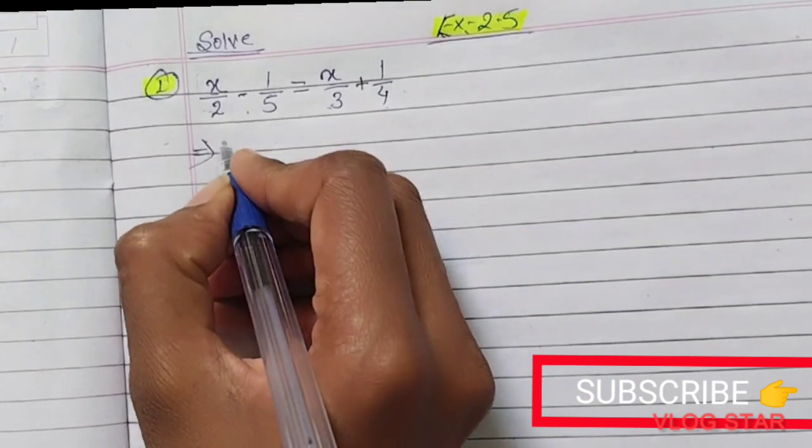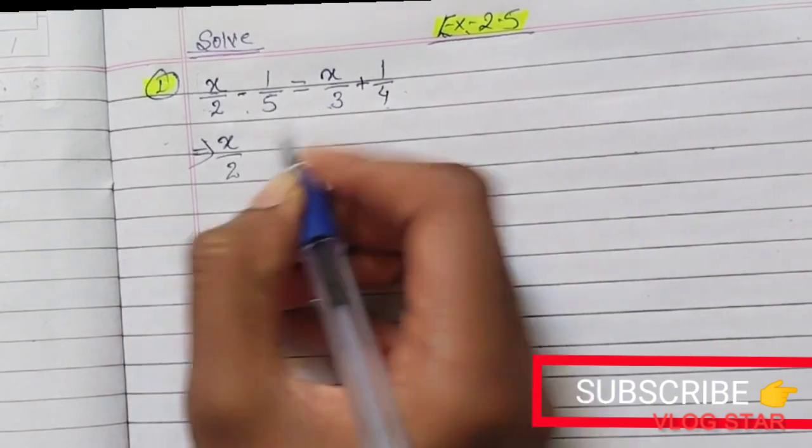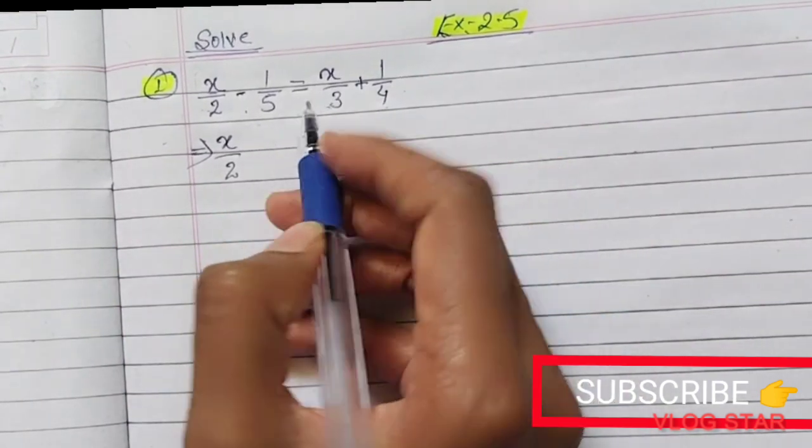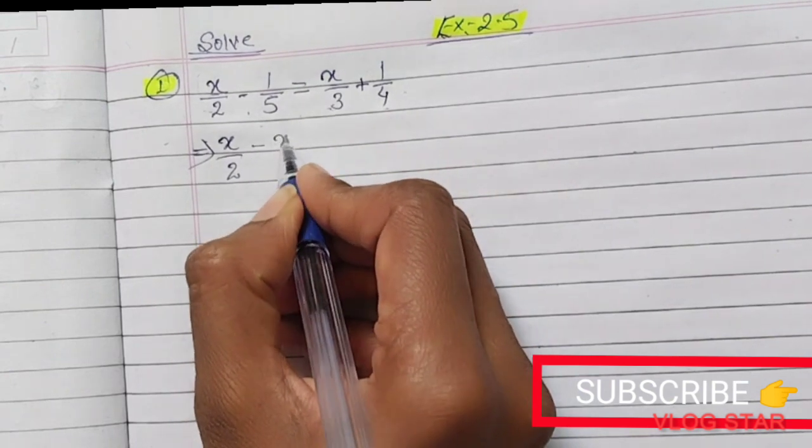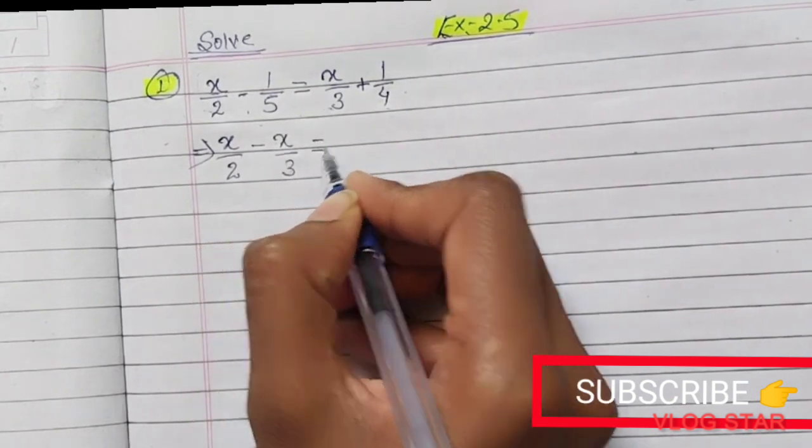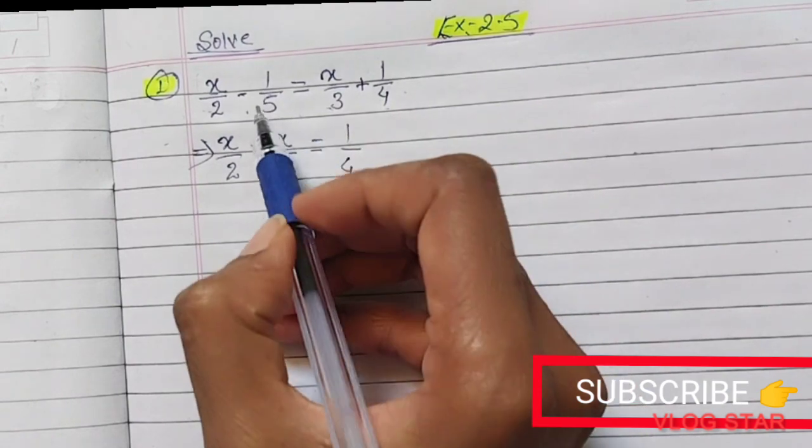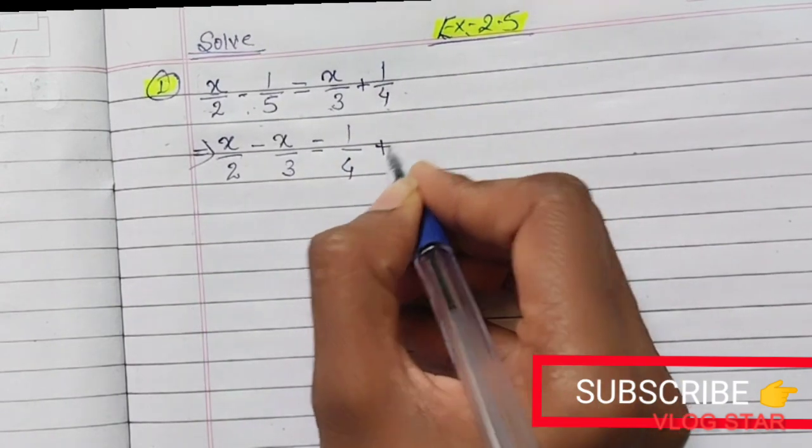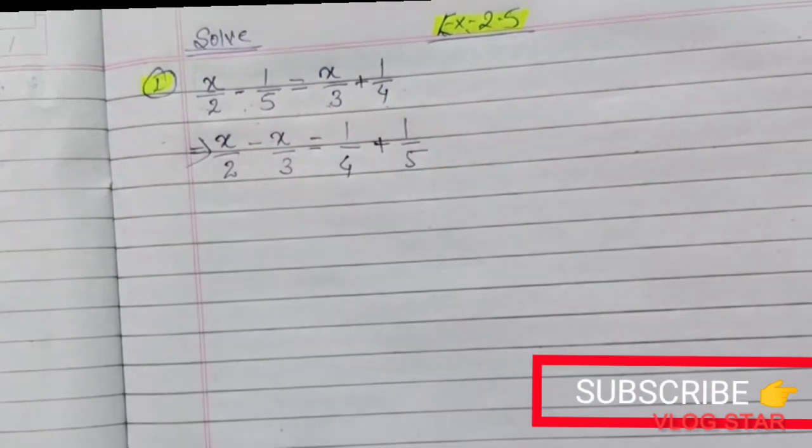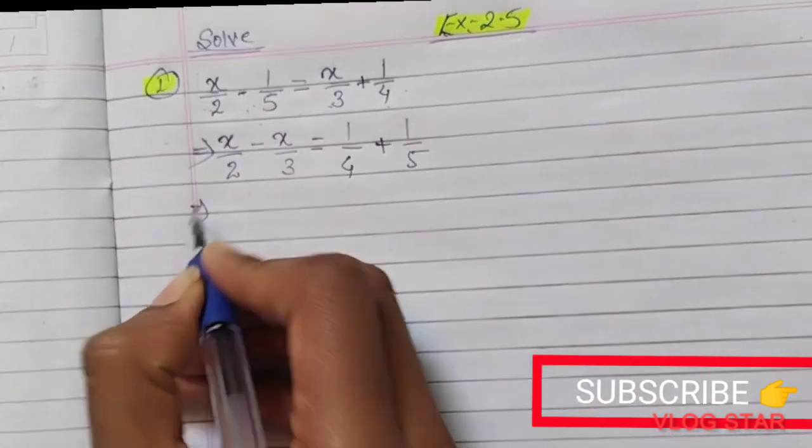I write here x/2. If this variable goes to the other side of the equals sign, it becomes minus x/3. On the right side we have 1/4, and this minus goes to the other side and becomes plus 1/5.